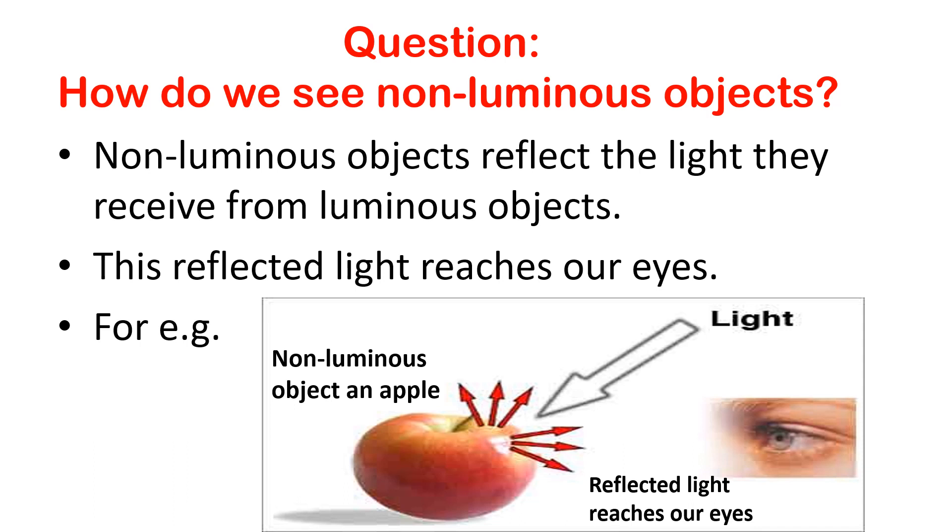How do we see non-luminous objects? Non-luminous objects reflect the light they receive from luminous objects. This reflected light reaches our eyes. You can see in the figure.